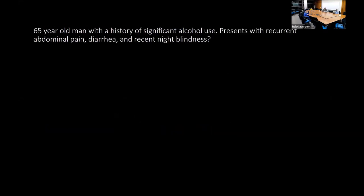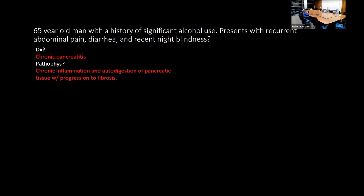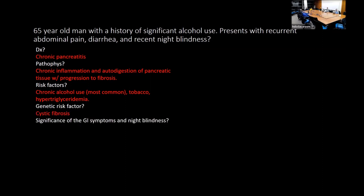A 65-year-old man with significant alcohol use presenting with recurrent abdominal pain, diarrhea, and night blindness has chronic pancreatitis. The pathophysiology involves chronic inflammation and autodigestion of pancreatic tissue leading to eventual fibrosis. Chronic alcohol use is the most common risk factor. GI symptoms and night blindness are due to exocrine enzyme deficiency causing steatorrhea and malabsorption of fat-soluble vitamins.